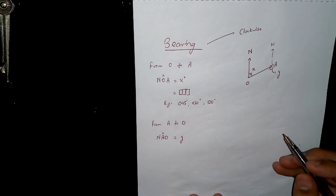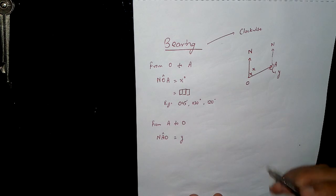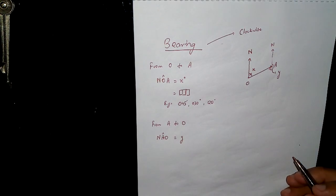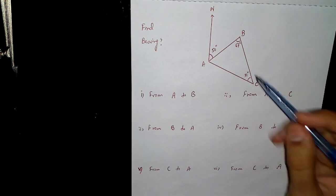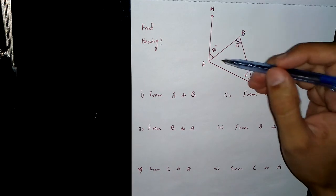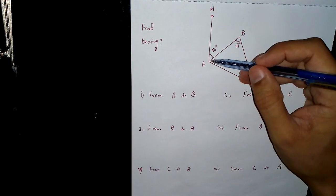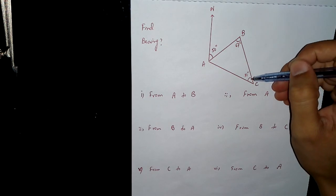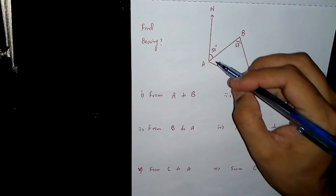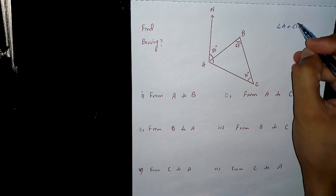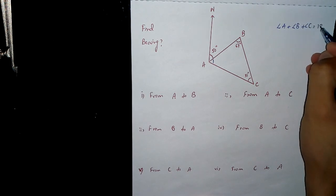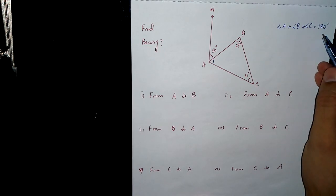So this is the basic concept of bearing. I will now start a question in which I will show you how to find different types of bearing. In this question, we have been given a triangle ABC. The North is given at A. We have an angle of 50 degrees here, angle B is 67 degrees, and angle C equals 31 degrees. First of all, I have to find this unknown angle using angle A plus angle B plus angle C equals 180 degrees, because the sum of angles in a triangle is always 180 degrees.